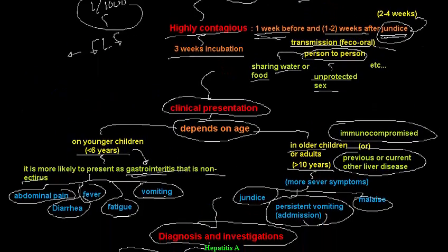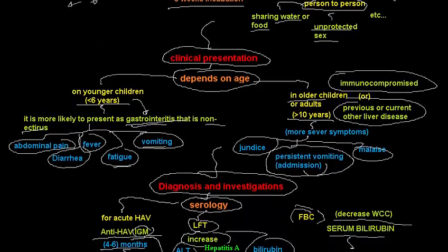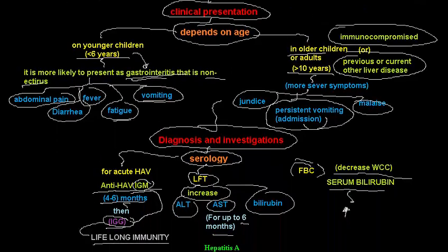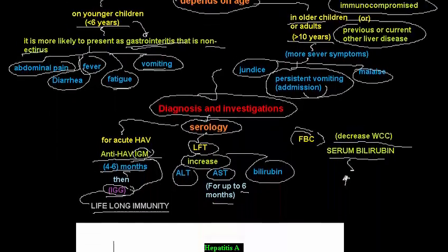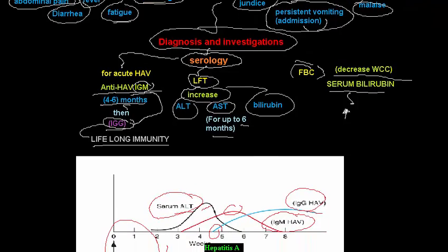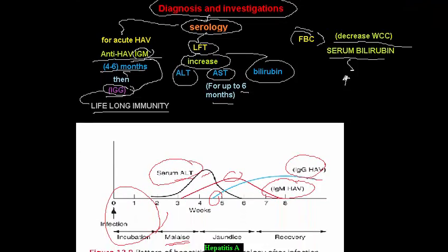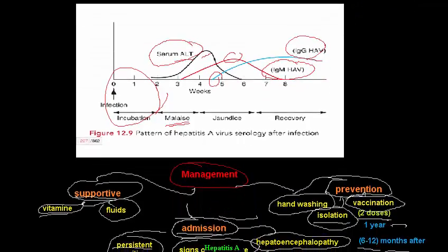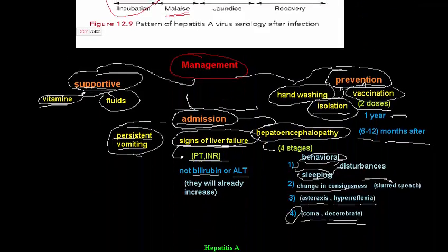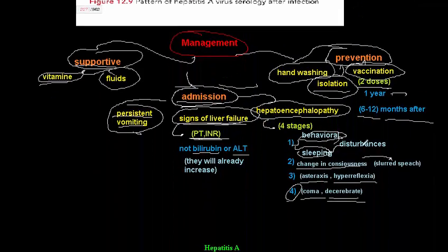To summarize: hepatitis A virus definition, clinical presentation depending on age in younger and older children, diagnosis and investigation — IgM is the most important marker — and management with supportive treatment. Admission indications include persistent vomiting, signs of liver failure, and hepatic encephalopathy. Prevention includes handwashing, isolation, and vaccination.